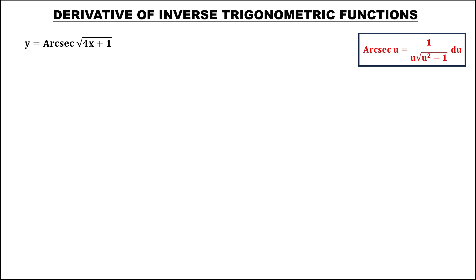Let's have this problem. To find the derivative of an inverse trigonometric function, specifically for this inverse secant, we use the formula. From the given, u is equal to the square root of 4x plus 1.